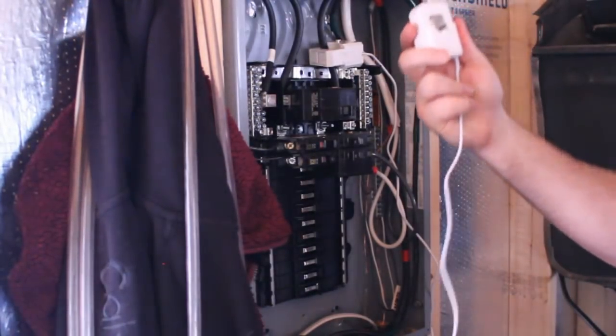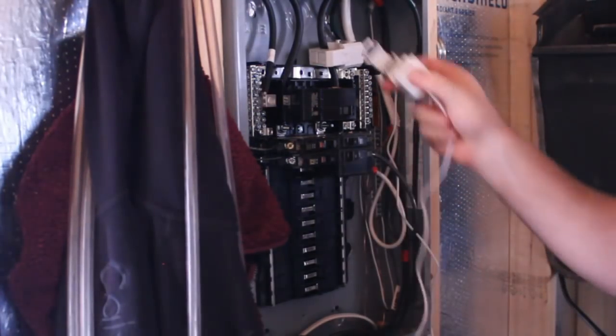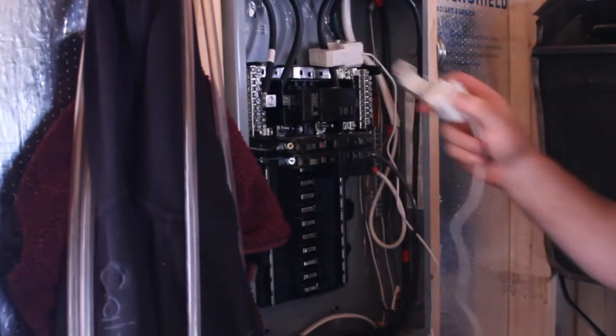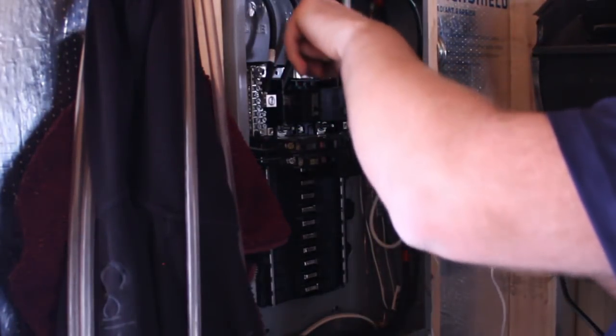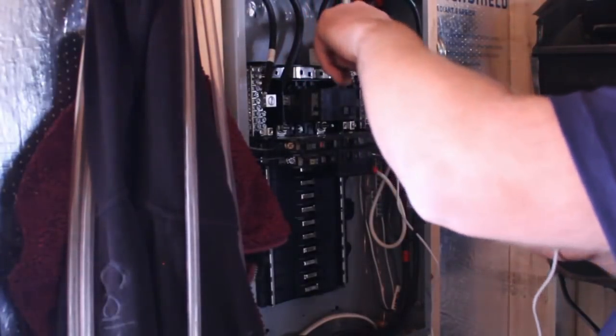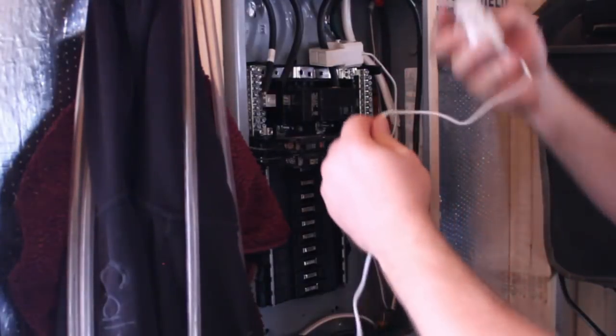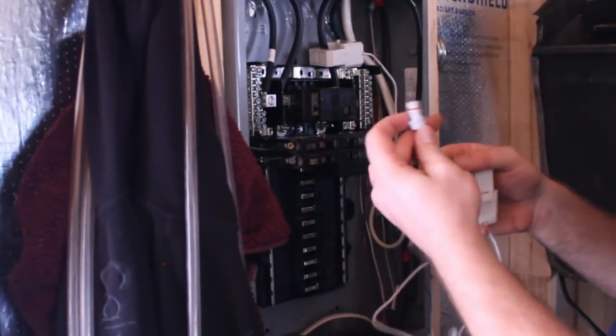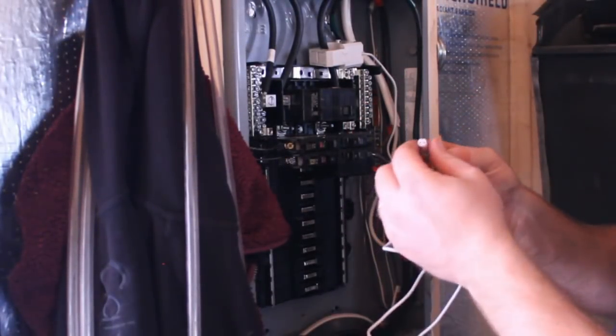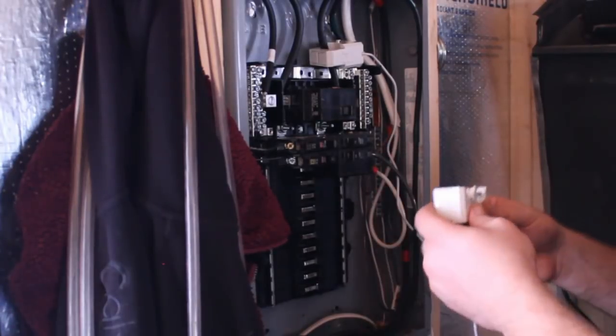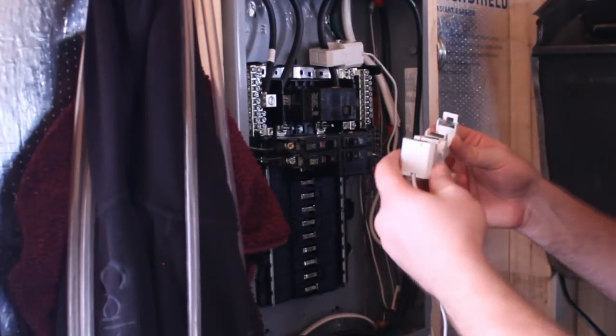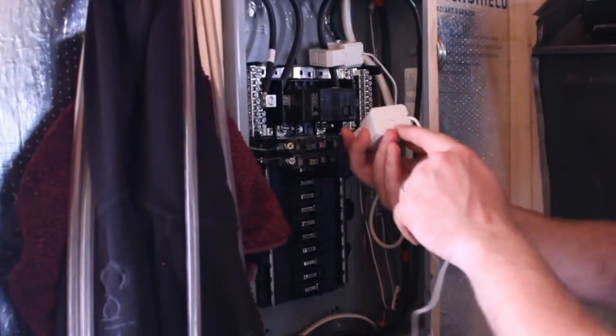And the way these current transformers work is they wrap around the main electrical feeds into the panel. And as current flows through these two feeds on both of the AC phases, that current generates a magnetic field and a voltage that flows down this wire, these two wires. The unit that these connect to measures that electrical voltage, and based on the amount of voltage, it can determine the amount of current that's flowing into the panel. And these are numbered.